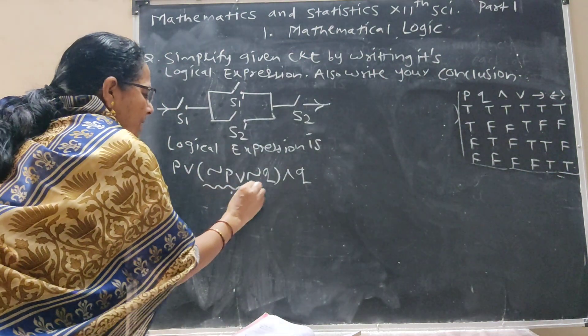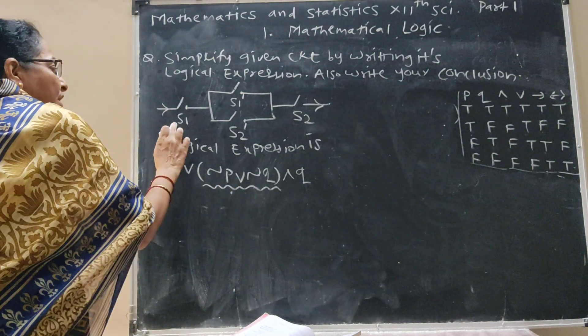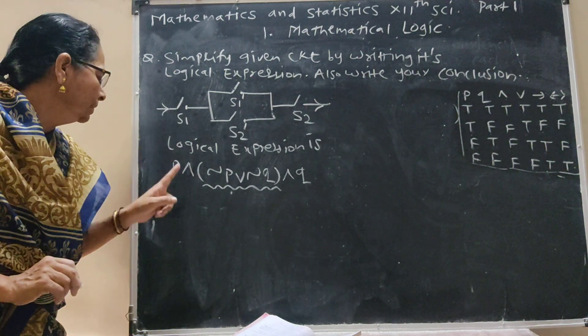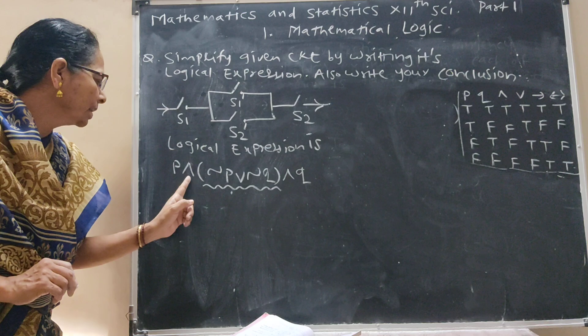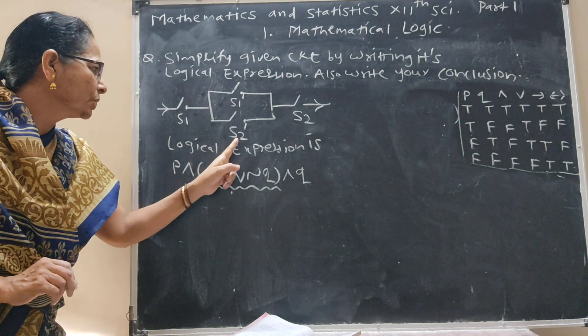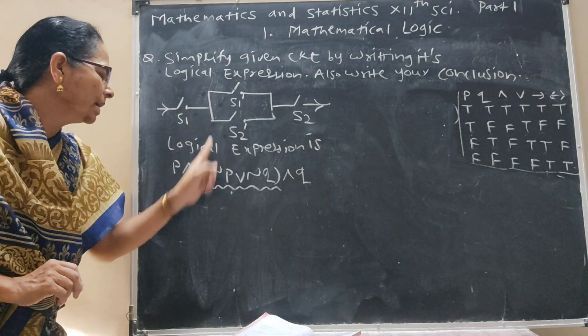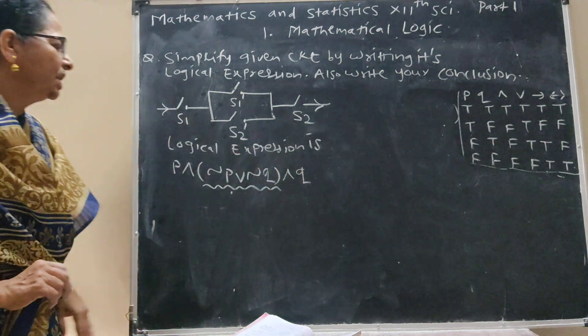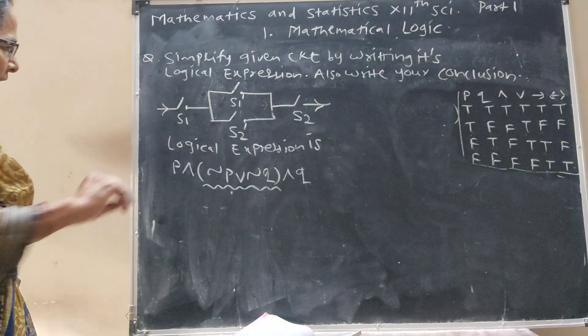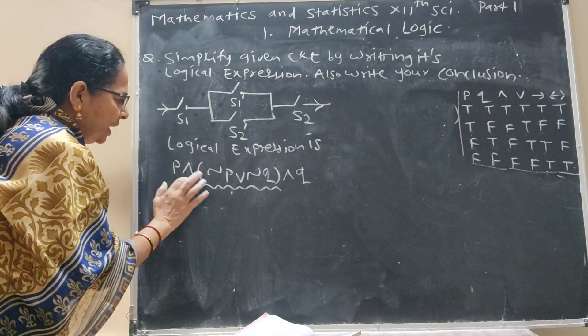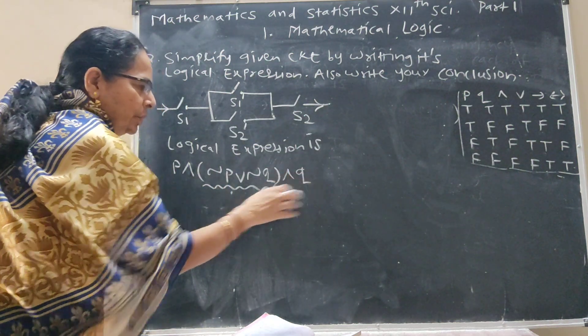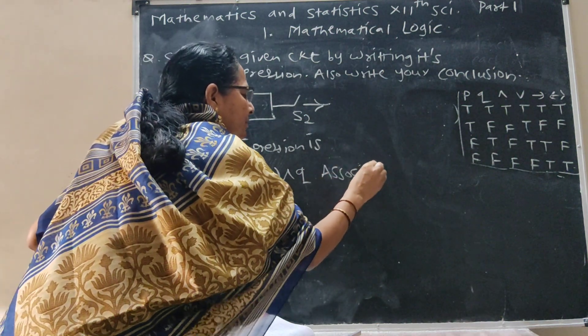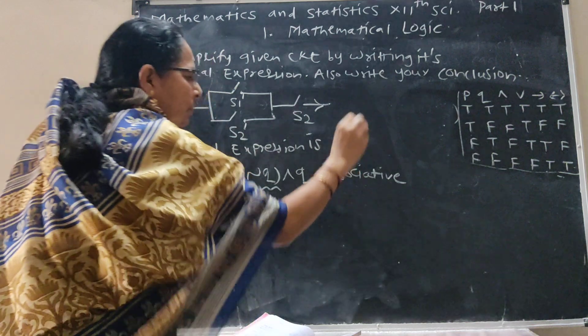Now this is logical expression and if we take this term as X then here is P and X and Q. So this is associative law.